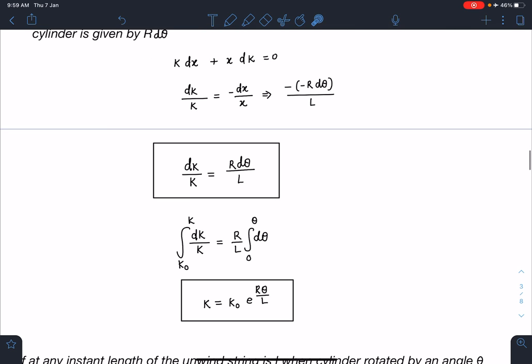This way I can find out how the spring constant k is changing with the angle θ. It's a very simple relation: ln(k/k₀) equals Rθ/L, or I can say k equals k₀ times e^(Rθ/L). I hope you are able to follow this part.